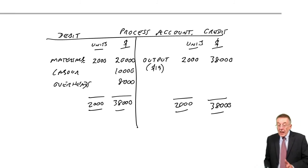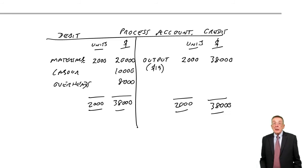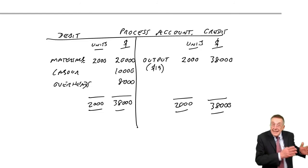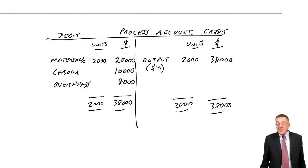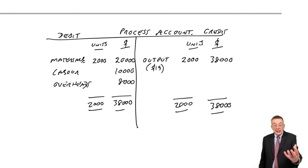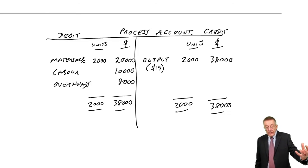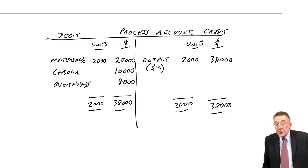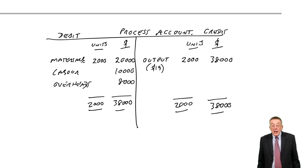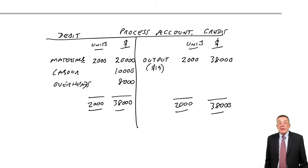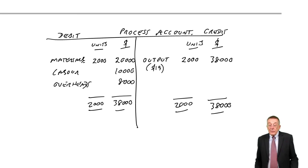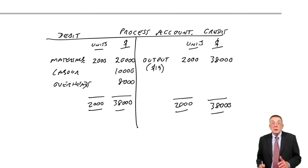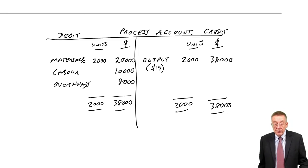Those 2,000 units that go out will either go to the next process — 2,000 units worth 38,000 — where we'll do more work, as you'll see in later chapters. Or maybe they're now completely finished, in which case those 2,000 would go to a finished goods account.